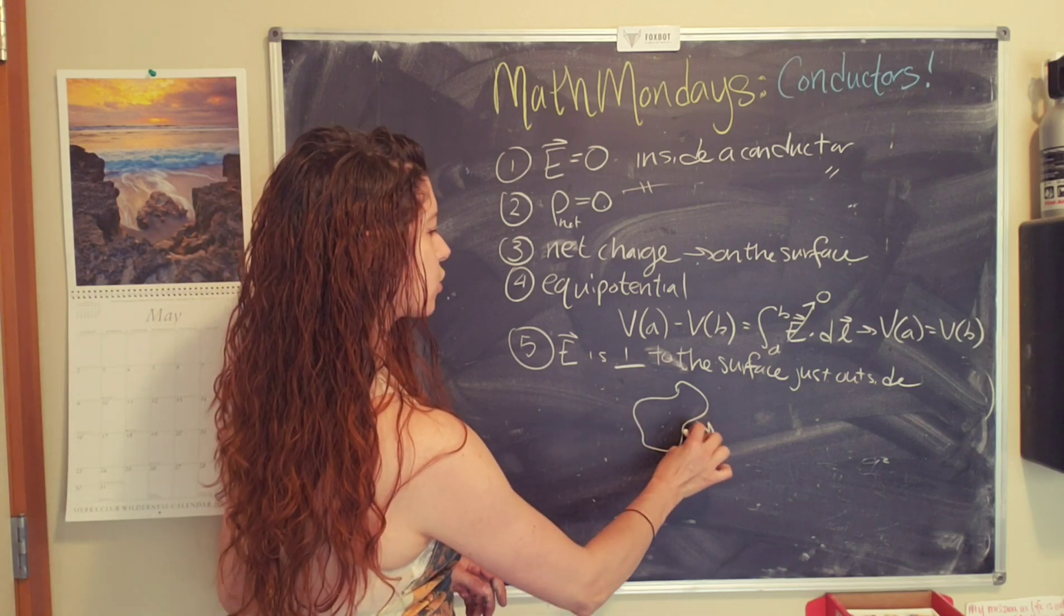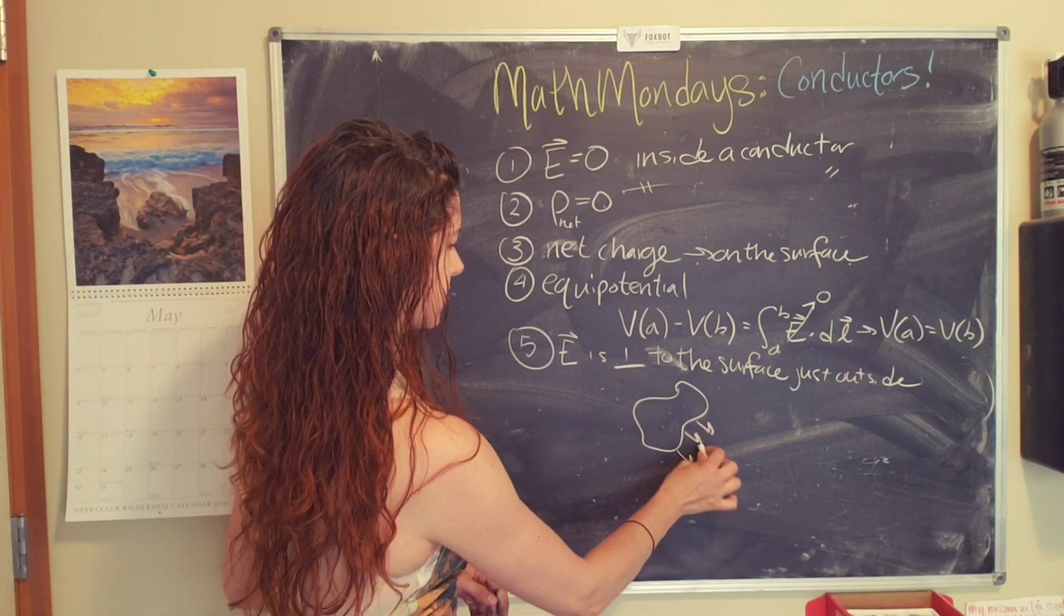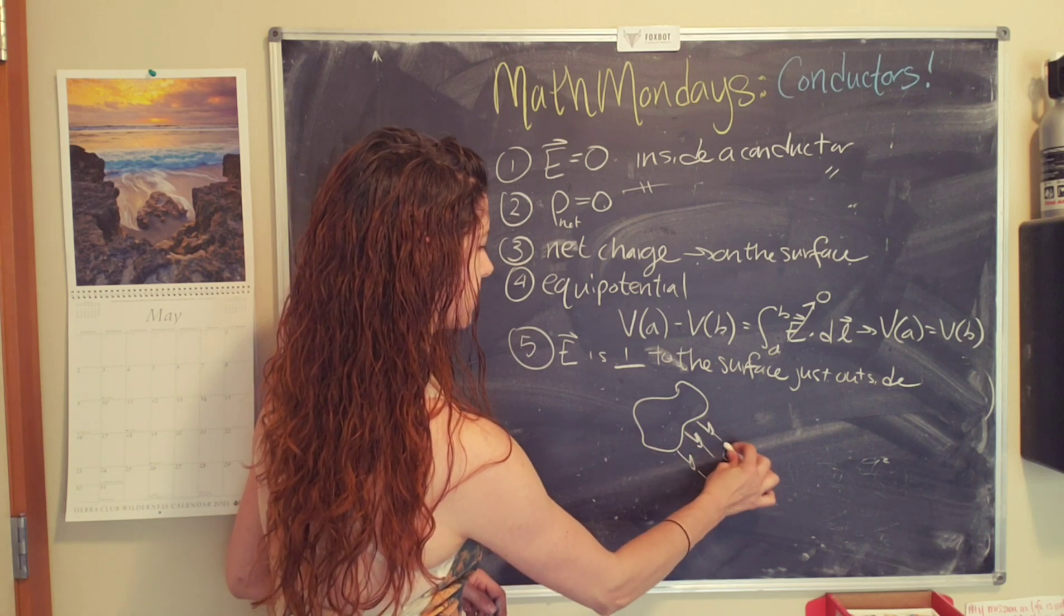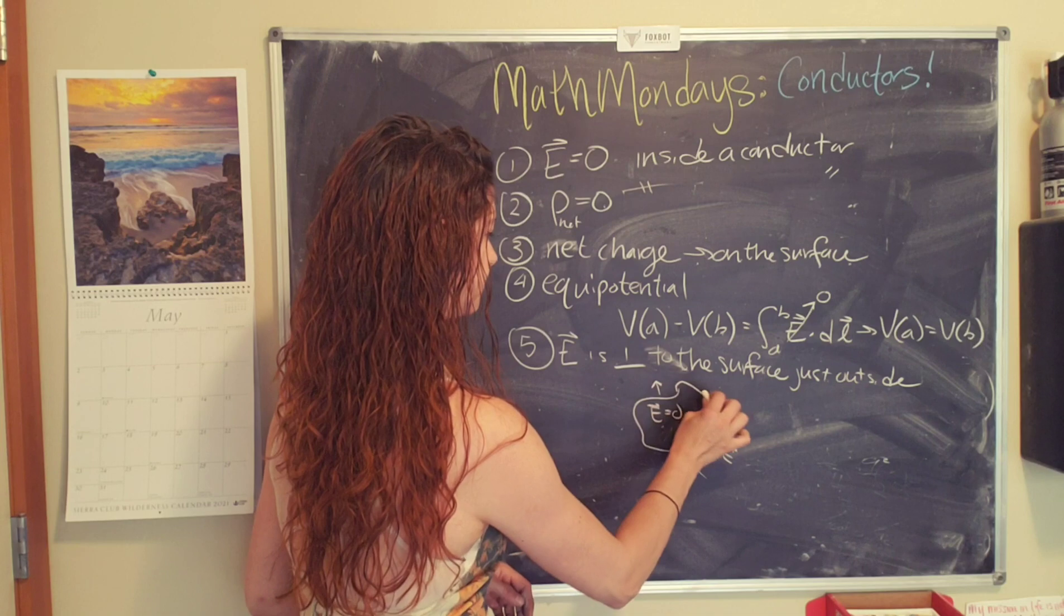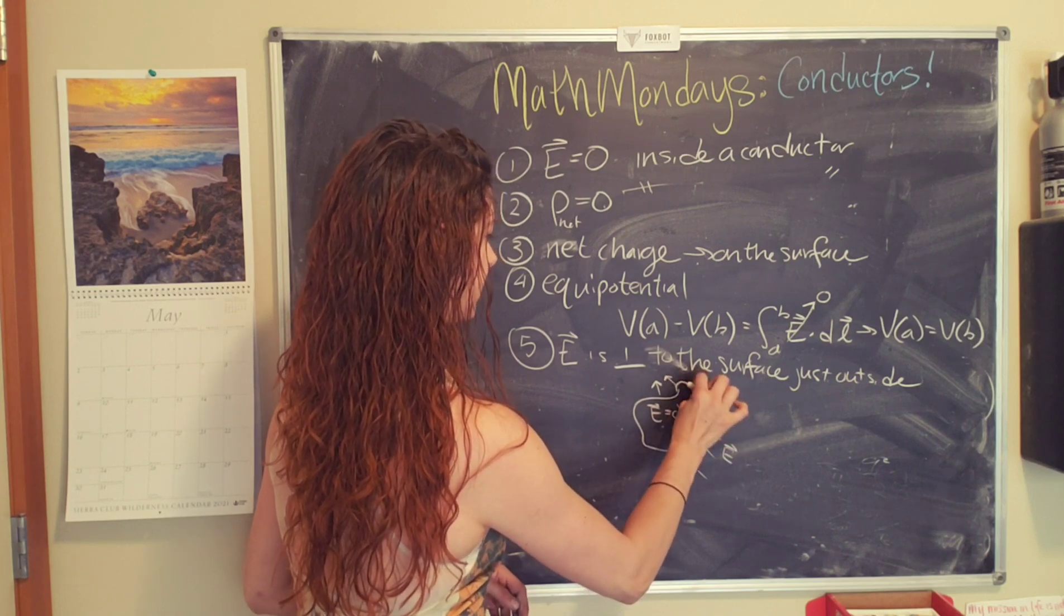So, the electric field outside, and these kind of keep going. So this is E outside. Remember E is zero inside, but it will be perpendicular.